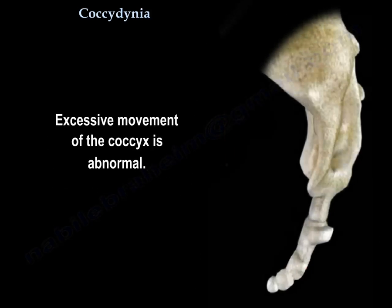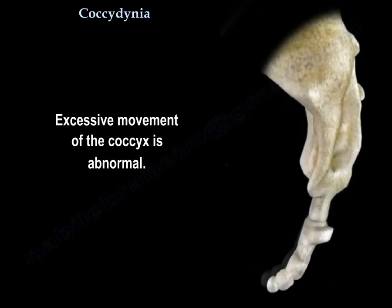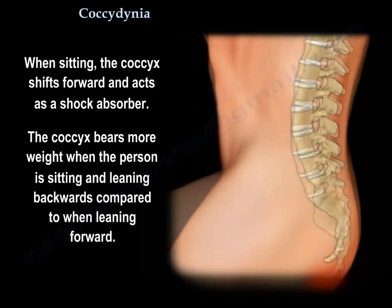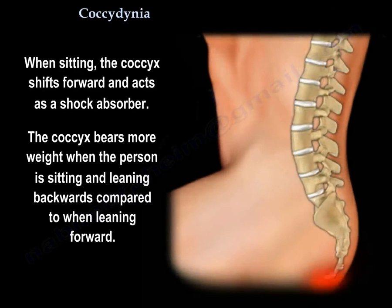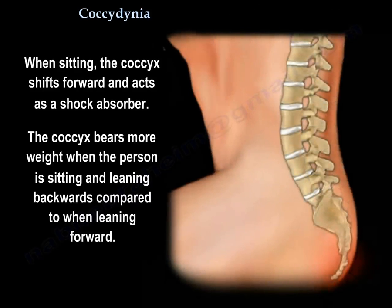Excessive movement of the coccyx is abnormal. When sitting, the coccyx shifts forward and acts as a shock absorber. The coccyx bears more weight when the person is sitting and leaning backwards compared to when leaning forward.